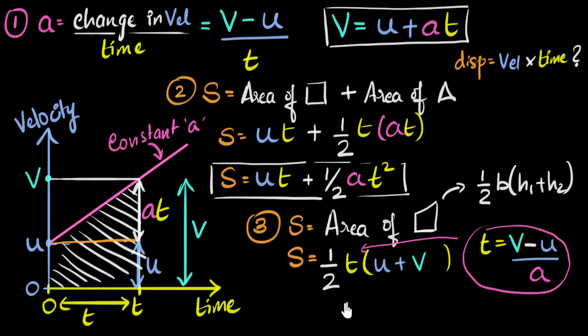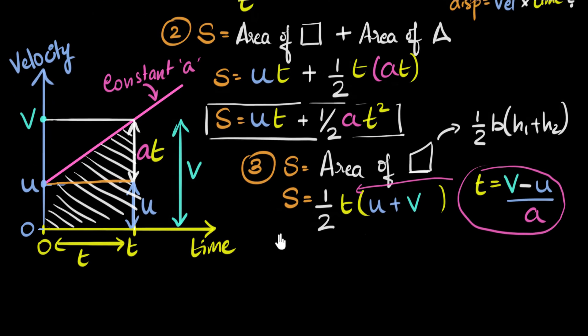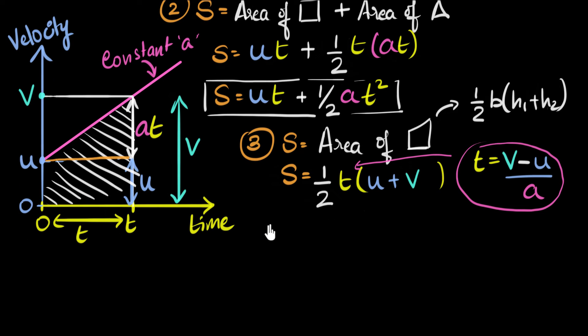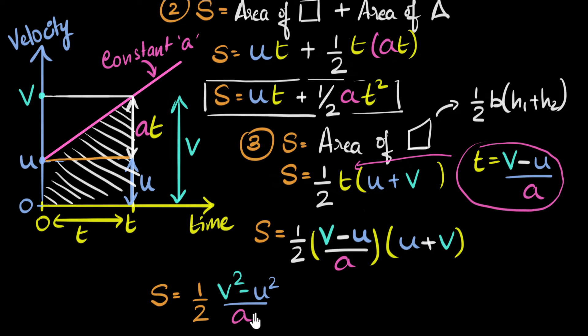Now, all we have to do is take this equation for time and plug it in over here. And again, it's one of those moments where you could pause the video and see if you can try this yourself. See what equation you end up with. All right, let's do this. So, if we substitute, we'll get S is half into time. The time is V minus U divided by A into U plus V. Now, if you simplify this, we get half into, look at the numerator. We have V minus U into V plus U. Ooh, that is V squared minus U squared. And in the denominator, I just have an A. And again, if we do some algebra and rearrange this, we will now end up with V squared minus U squared equals two A S. So, we end up with two A S. And that is our equation number three.